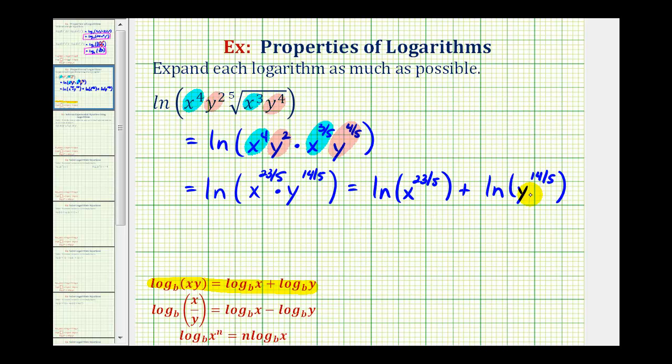And now we can expand this one more time by using the power property of logarithms given here, where we have log base b of x raised to the power of n is equal to n times log base b of x. So we can take this exponent and move it to the front of the logarithm here and here. So in expanded form we would have twenty-three-fifths natural log x plus fourteen-fifths natural log y. This would be the given logarithm expanded as much as possible.